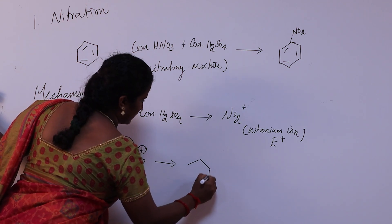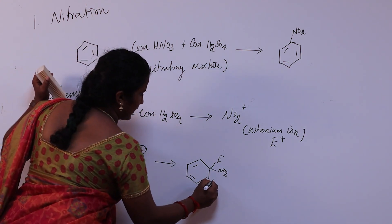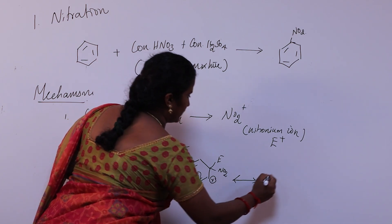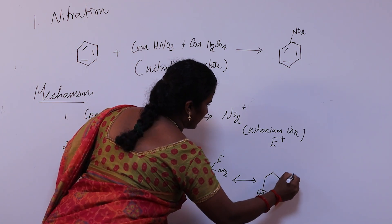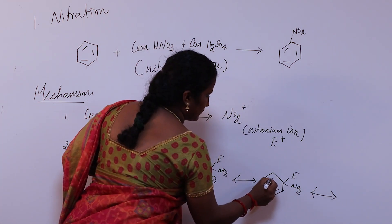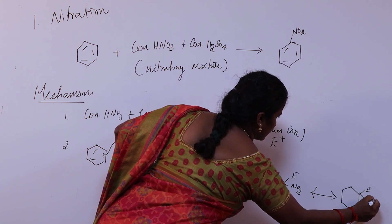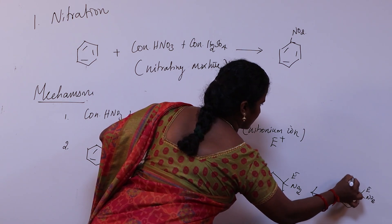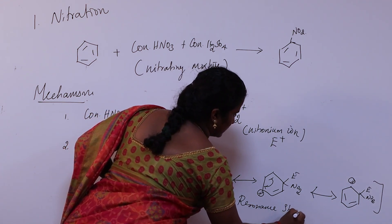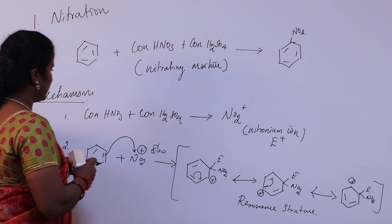The pi electrons attack NO2+ to form a resonance structure — a carbocation is generated. Then the pi bond shifts, generating a new carbocation at another position. Another pi bond shifts again. These are the resonance structures of the sigma complex intermediate. This step is slow because aromaticity is lost.